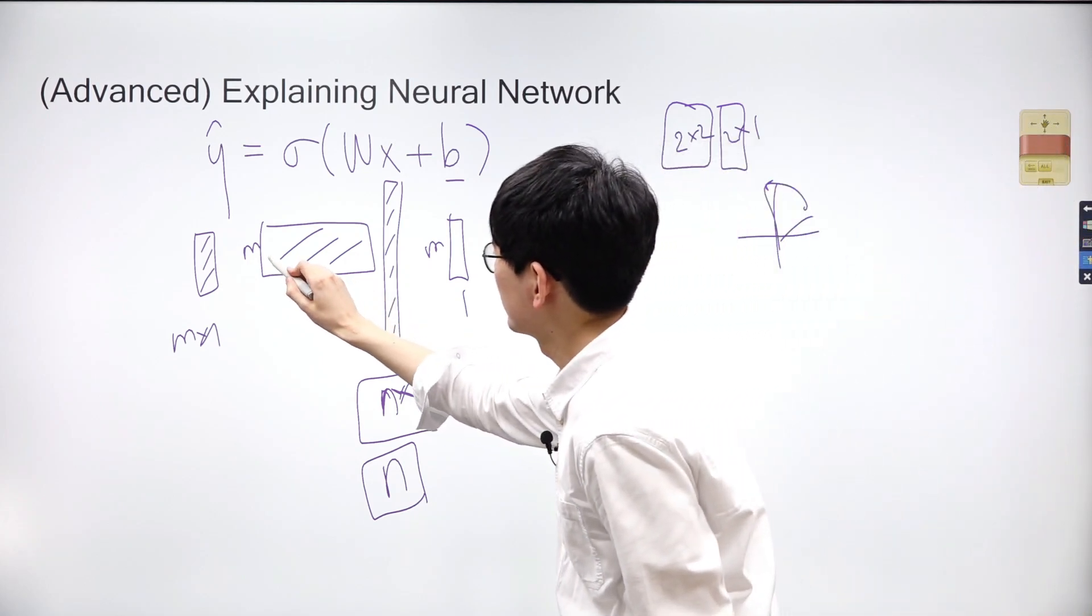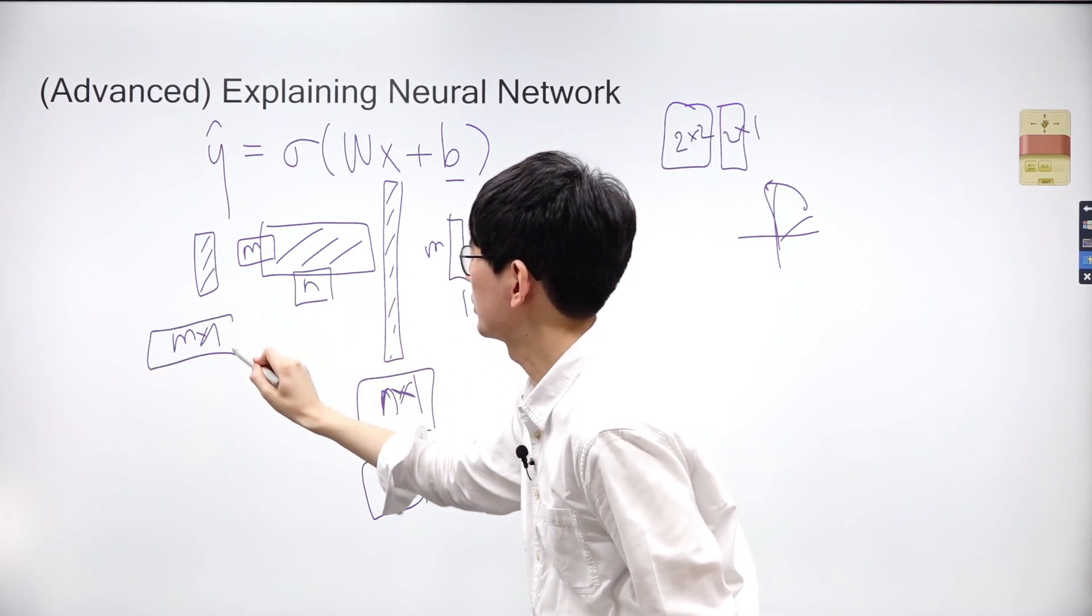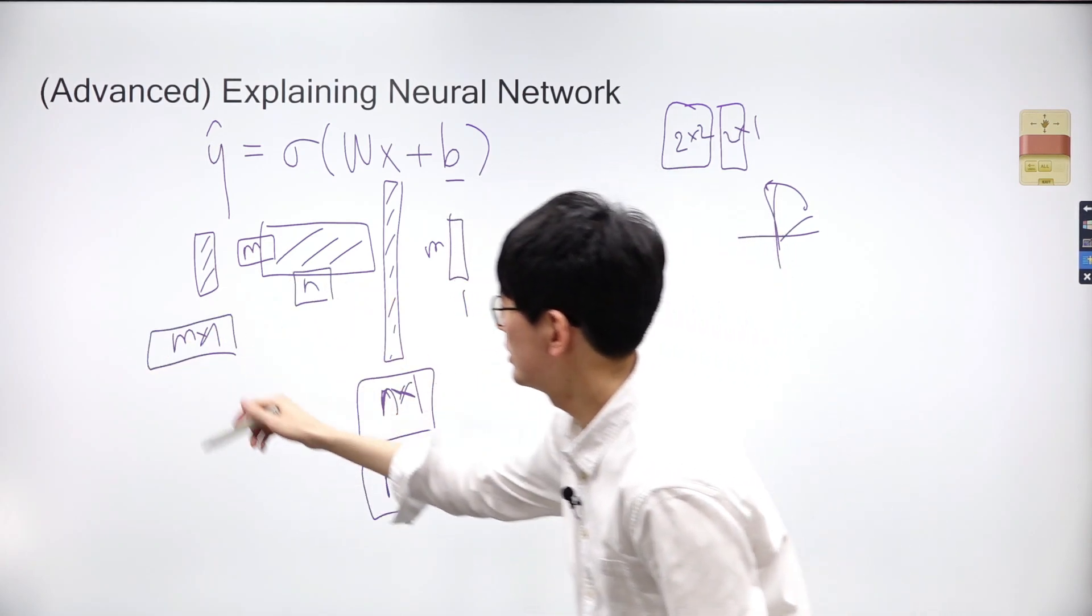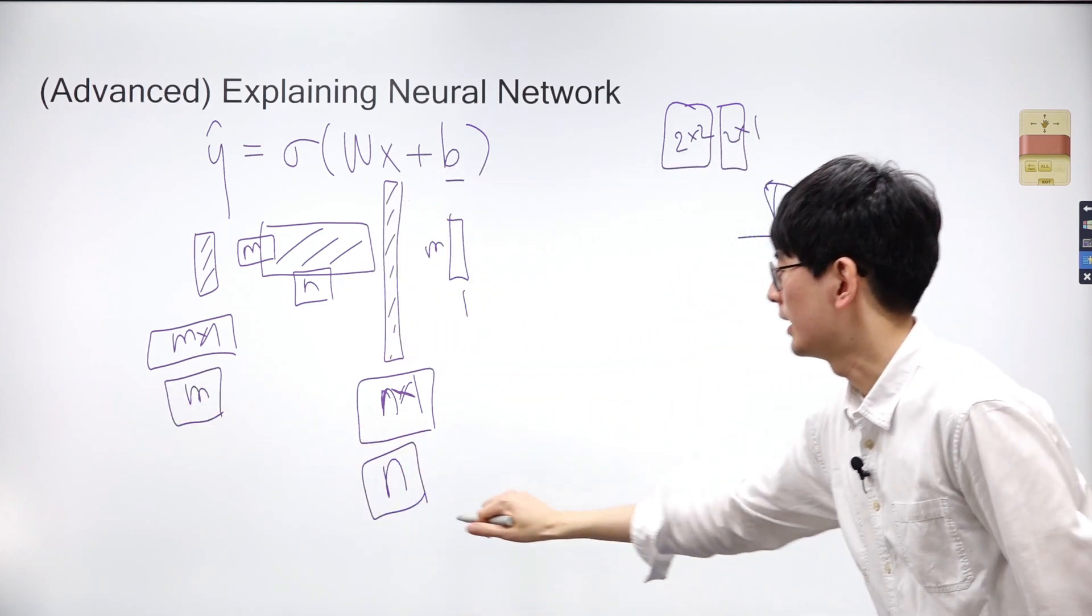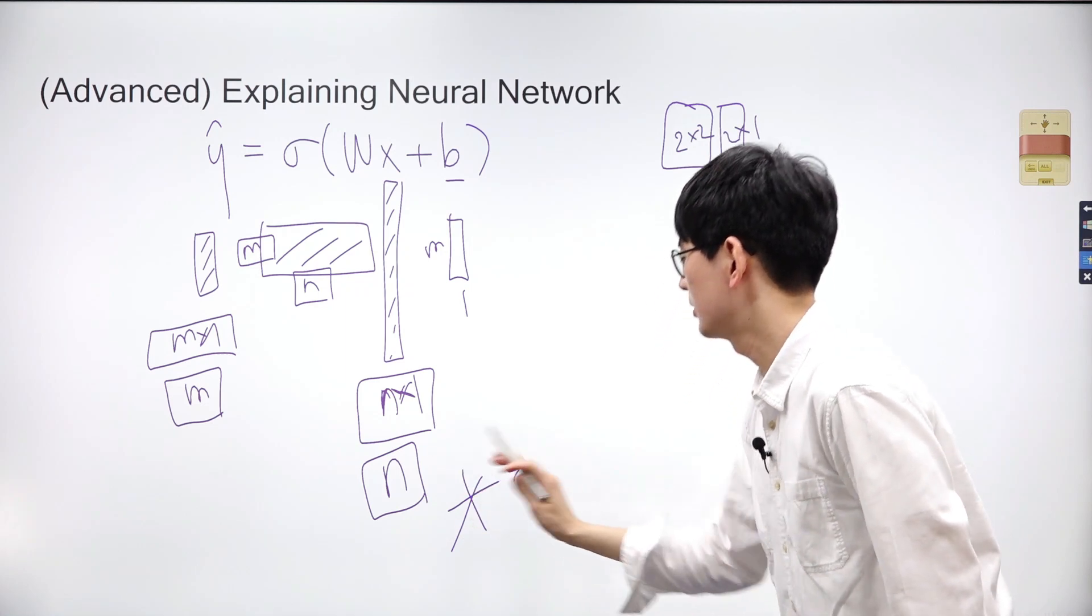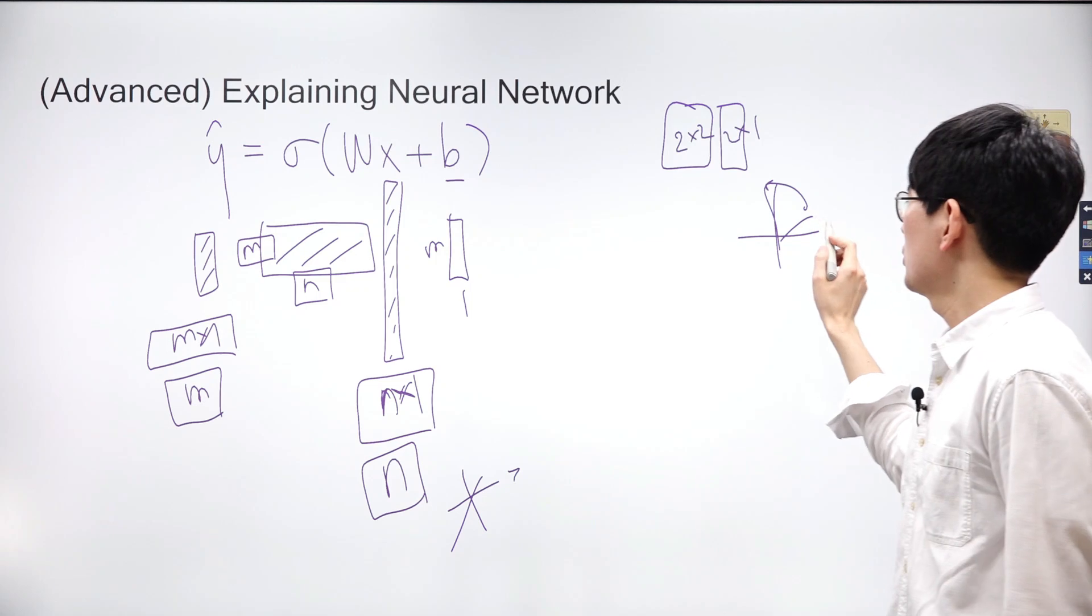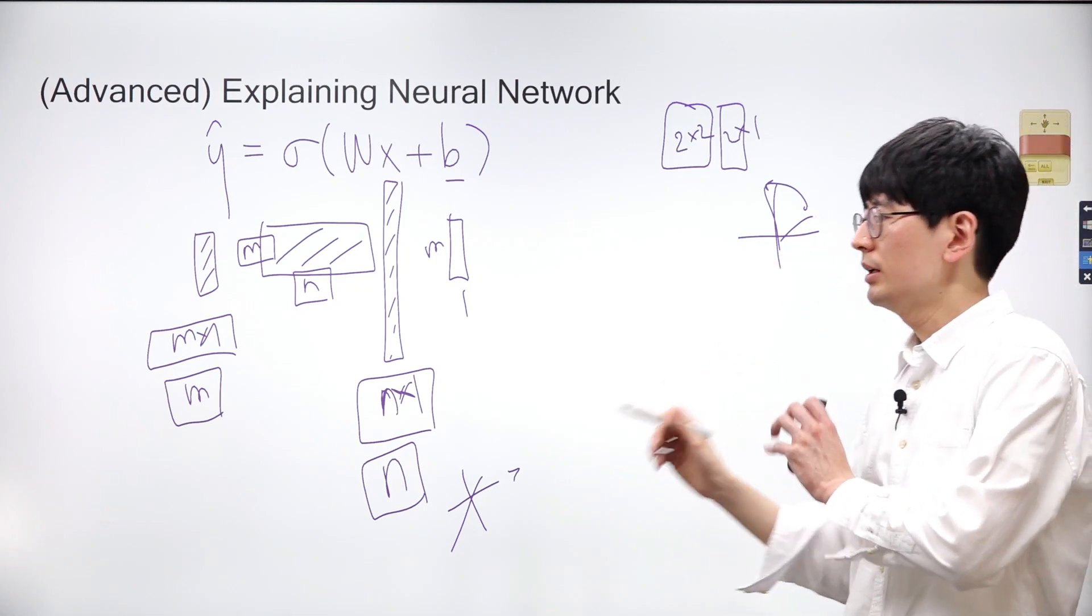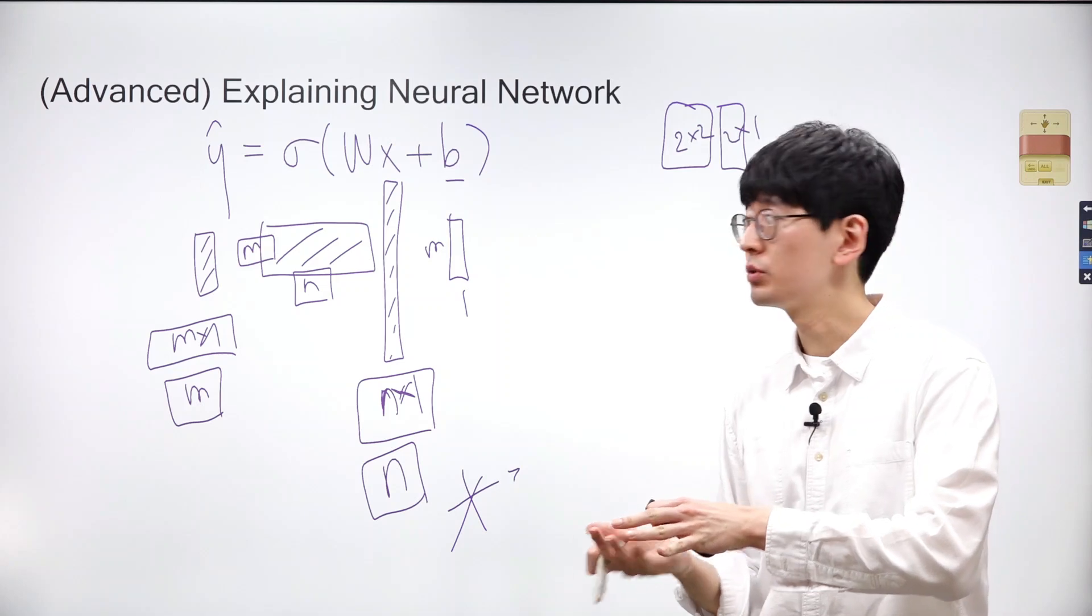However, in our equation, the number of rows and columns of weights W are different. The dimension of the input is N by 1, while the dimension of the output is M by 1, indicating that the information in the input has been compressed to lower-dimensional data. In other words, the input X exists in a high-dimensional space, while the output exists in a lower-dimensional space.